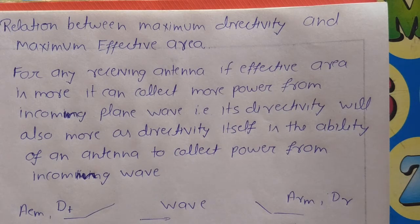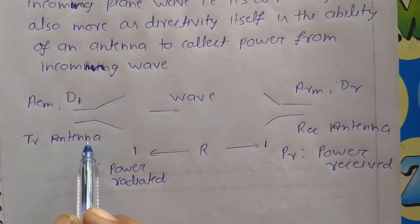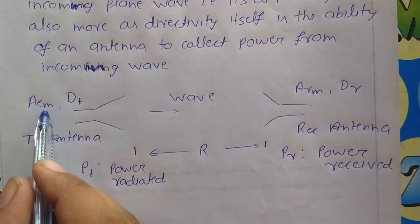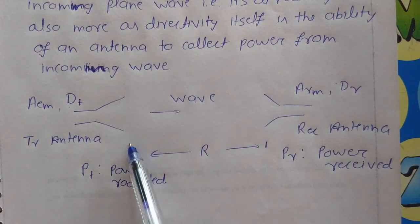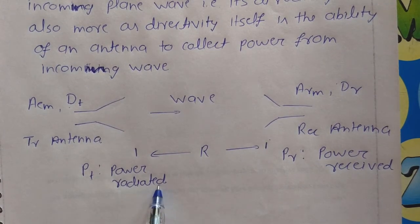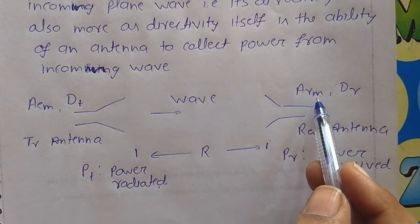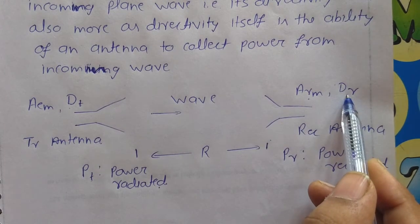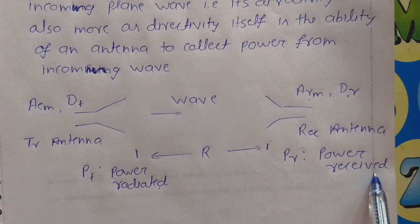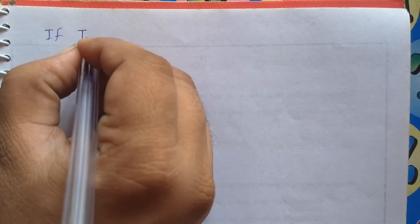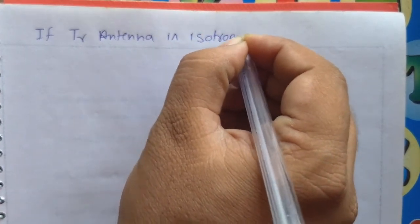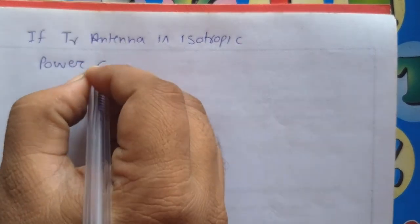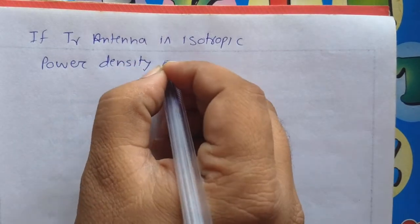See in this figure: there is a transmitting antenna. ATM is the effective aperture area of the transmitting antenna, DT is the directivity of the transmitting antenna, R is the total distance between the transmitting and the receiving antenna, PT is the power radiated by the transmitting antenna, ARM is the effective aperture area of the receiving antenna, DR is the directivity of the receiving antenna, and PR is the power received by the receiving antenna.